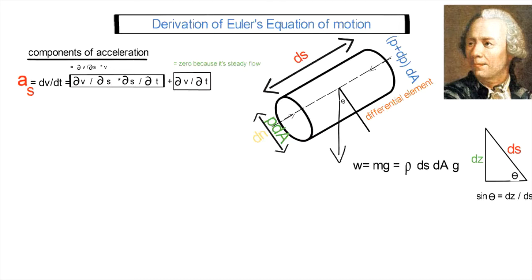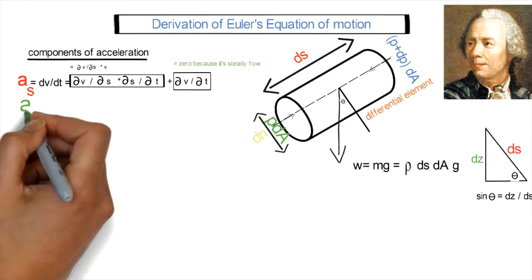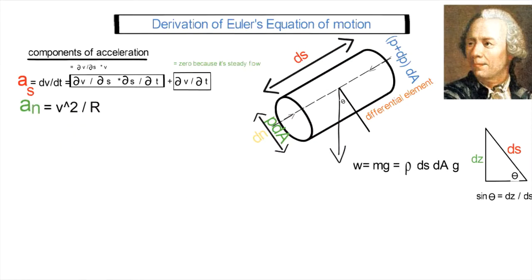Because we assume the flow is steady, dV/dt equals zero — there is no change in velocity with respect to time. Then we have An, which is the normal acceleration to the streamline, which equals V² divided by R. V²/R is the centripetal acceleration.